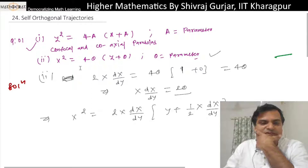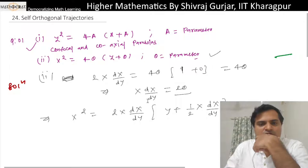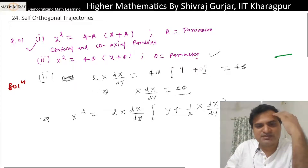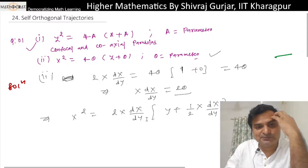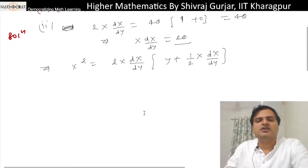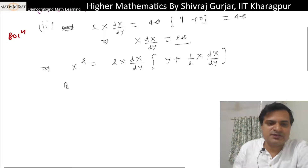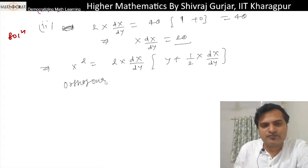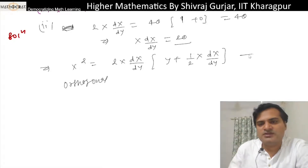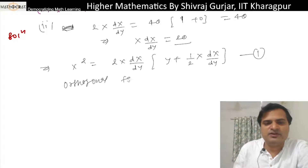Two x dx/dy equals 4θ·1, so that gives us (1/2) x dx/dy. Now let's see the orthogonal family — let's call this orthogonal family one.